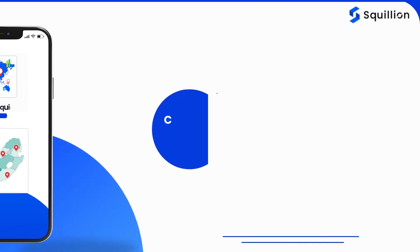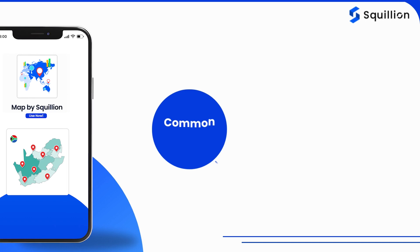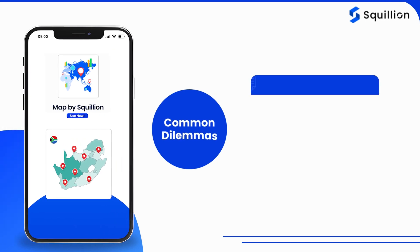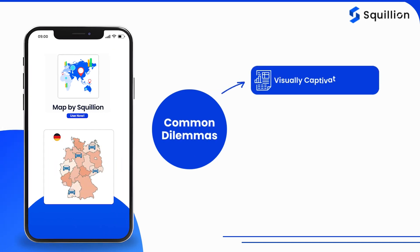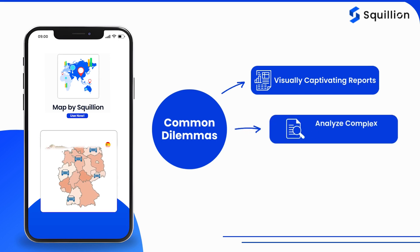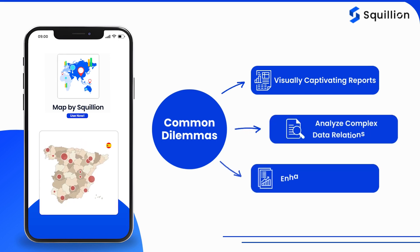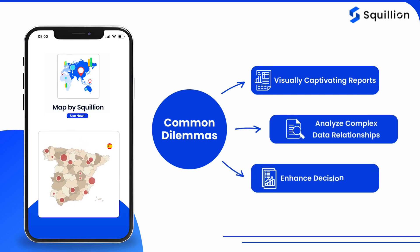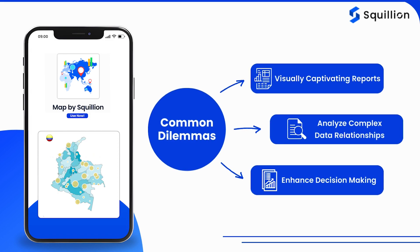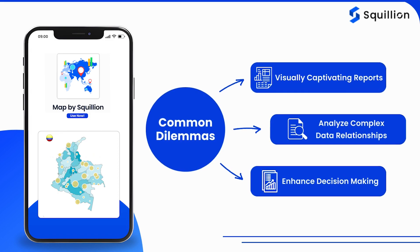These are just a few of the common dilemmas that Map by Squilion can solve. Whether you're looking to create visually captivating reports, analyze complex data relationships, or enhance decision-making with intuitive visualizations, Map by Squilion is your go-to solution.